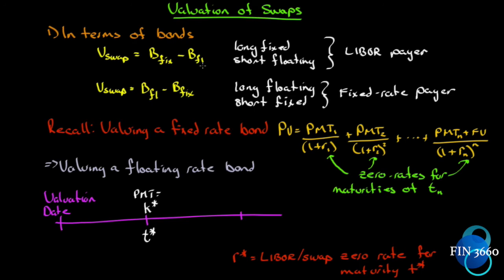These are mirror images of each other. If the value of the swap for the LIBOR payer is, say, plus one million, we don't have to calculate the other one — it'll just be negative one million. One of the basic definitions of a derivative is that they are zero-sum games. They are not creators of wealth; they are transfers of wealth. So it doesn't matter which approach you take — the LIBOR payer or the fixed rate payer. If one is positive, the other is negative.